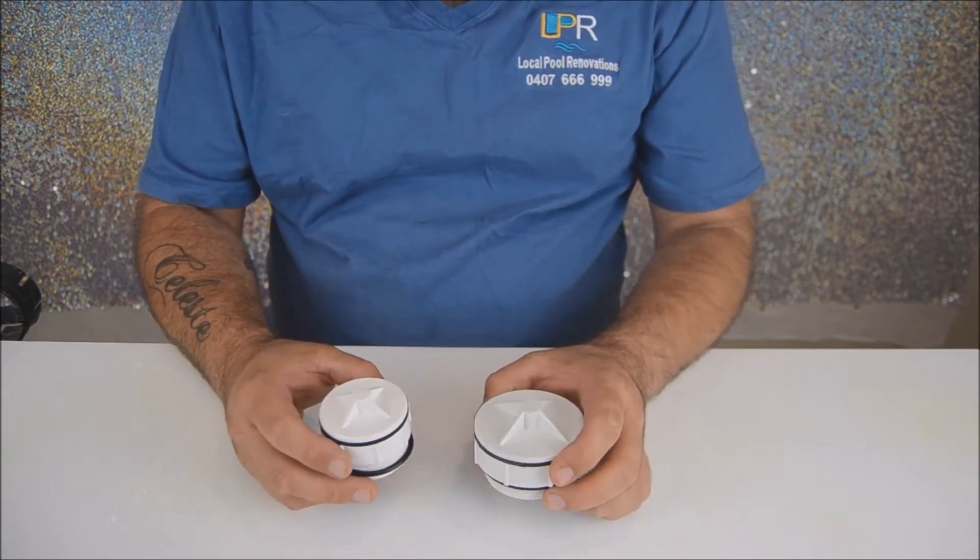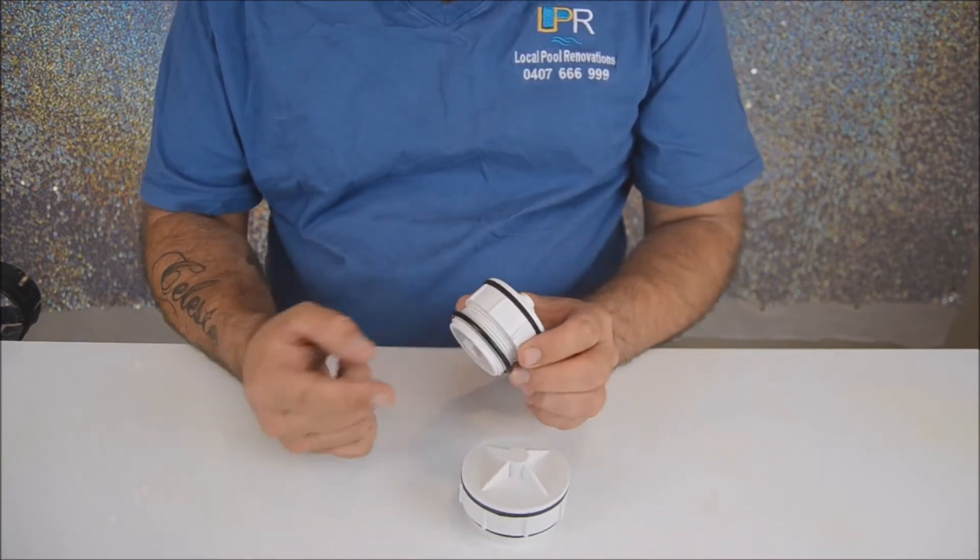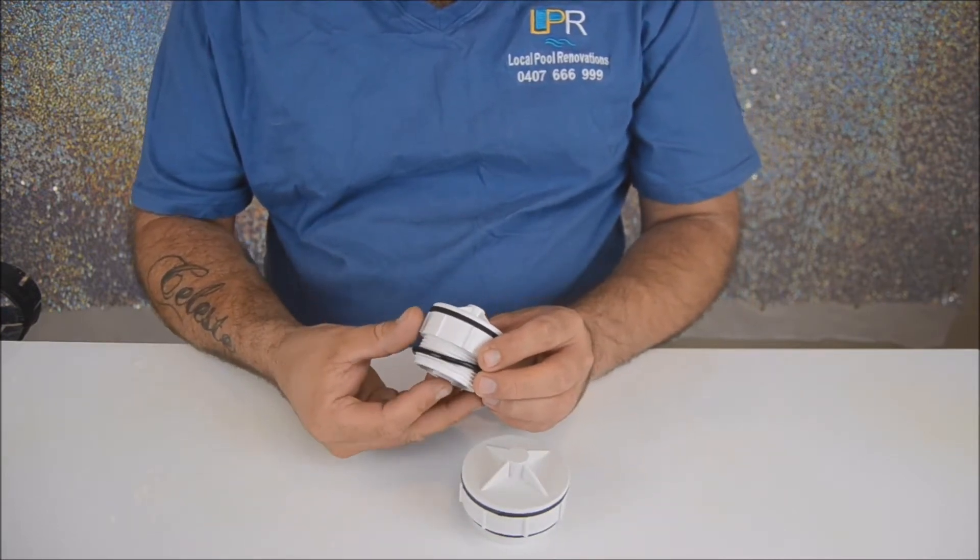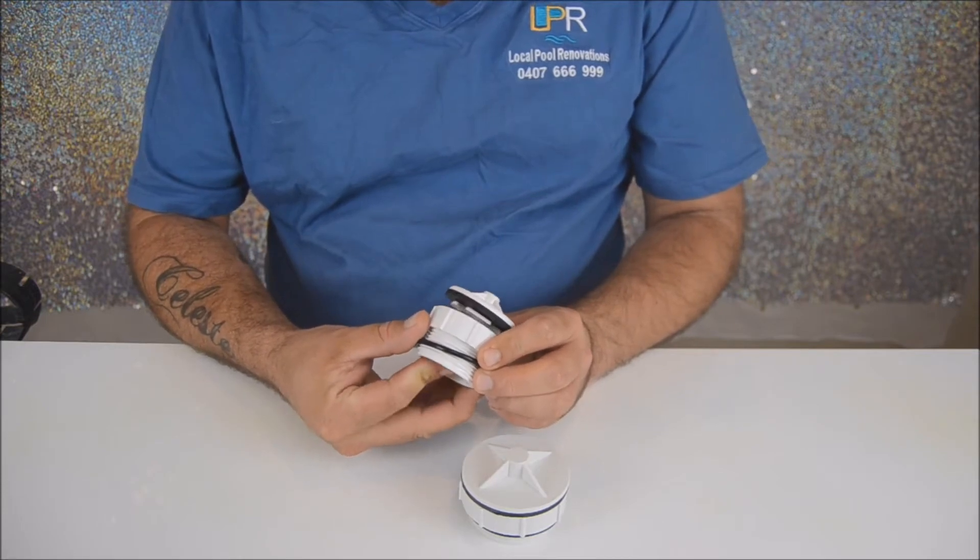The 40mm hydrostatic valve works the same way, where the water pressure goes in through the bottom of your pool and is released back into your swimming pool.